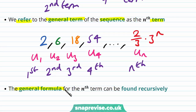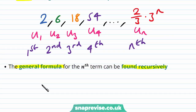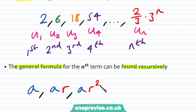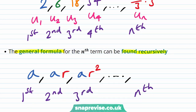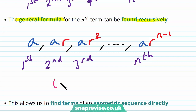The general formula for the nth term can be found recursively. In general, we can write a geometric sequence as the first term a, then ar, then ar², and so on. By looking at the corresponding terms — the first, second, third, nth term — and looking at the pattern, we can see that the nth term is going to be a·r to the power of n minus 1. Because the third term, for example, is ar², and 2 is 3 minus 1. Therefore, for the nth term, we have a·r to the power of n minus 1. Therefore, the formula for u_n, the nth term, is a·r^(n-1).